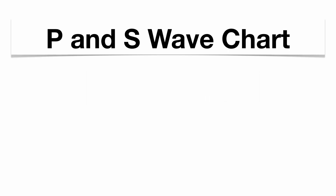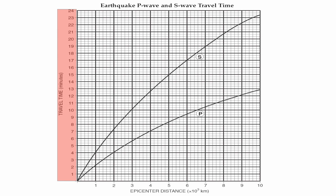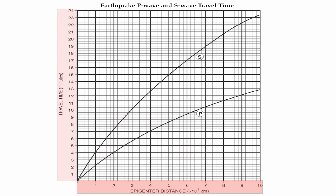Once you have those down, you can use your chart to help manipulate questions. The first thing you need to understand are your axes. The vertical axis is your travel time — that's in minutes, going from 0 to 24 minutes, and each line is an increase of 20 seconds. Your horizontal axis is your epicenter distance, going from 0 to 10,000 kilometers, and each line increases by 200 kilometers.